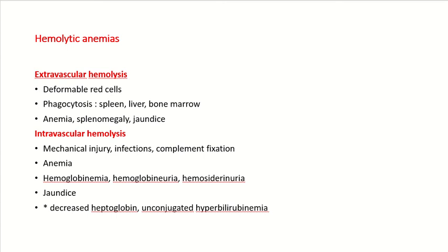In extravascular hemolysis, deformed red blood cells passing through the liver, spleen, and bone marrow undergo phagocytosis. This condition leads to anemia, jaundice, and splenomegaly. While in intravascular hemolysis, RBCs are broken down inside the blood vessel, which leads to hemoglobinemia, hemoglobinuria, hemosiderinuria, and jaundice.